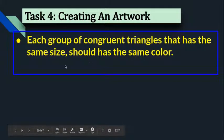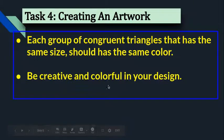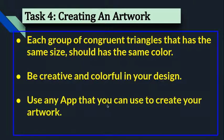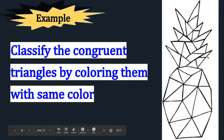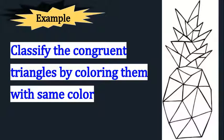Each group of congruent triangles that has the same size should have the same color. Be creative and colorful in your own design, and we can use any app that we want to create our artwork. Classify the congruent triangles by coloring them with the same color. You can use any objects you want, any picture on the internet that can help you with it, and you can draw them or print them using congruent triangles.